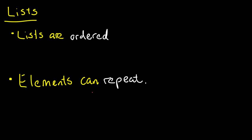Today we're going to talk about lists. Lists are pretty cool because they're going to help us count, and counting is fun. Lists are different from sets, which we'll learn about in the next video or two. Lists are ordered, and when writing out a list we use open and close parentheses. So a list of elements looks like (a, b, c, d, e) — the first five letters of the alphabet.